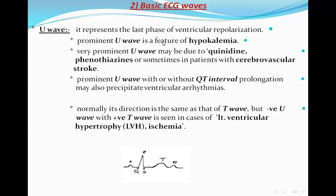The U wave represents the last phase of ventricular repolarization. A prominent U wave is a feature of hypokalemia; a very prominent U wave may be due to quinidine, phenothiazines, or cerebrovascular strokes. A prominent U wave, with or without QT interval prolongation, may also precipitate ventricular arrhythmias. Normally the U wave direction should be the same as the T wave, but a negative U wave with a positive T wave is seen in left ventricular hypertrophy or ischemia.